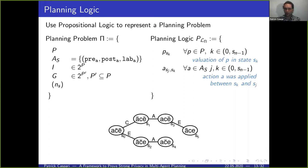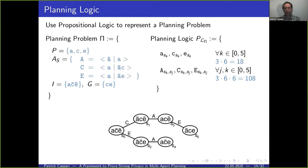Going back to our example: we have three propositions P and six states, so we need 18 propositions of the first kind — one per proposition per state. For the action propositions, we need six times six combinations of states, times three actions A, C, and E. So already for this very small problem we get 18 plus 108, giving us 126 new propositions in our planning logic.